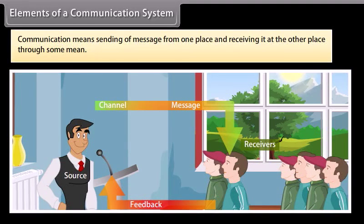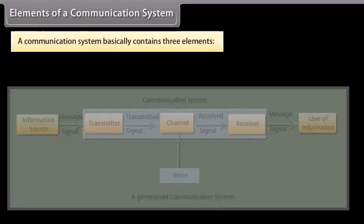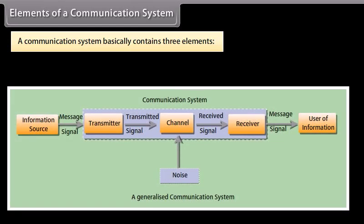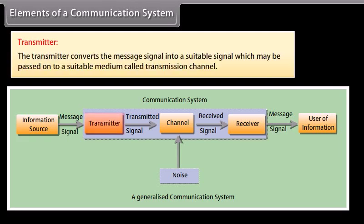Communication means sending of a message from one place and receiving it at the other place through some means. A communication system basically contains three elements: transmitter, transmission channel, and receiver.